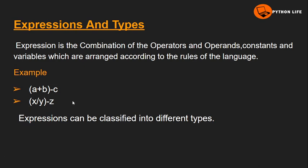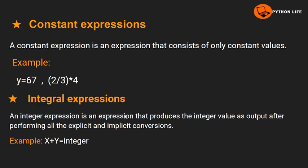Expressions can be classified into different types. The first type is constant expressions. A constant expression contains specific constant values — for example, x equals 67. These are constant values coming into constant expressions.